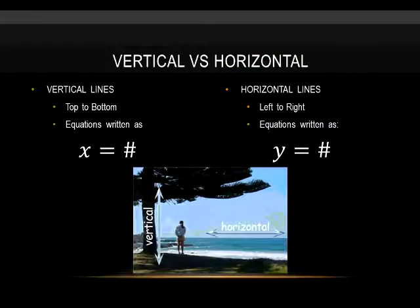So vertical versus horizontal lines. The biggest thing is know the difference, know when you have each. Vertical lines go up and down. They're written as x equals some number. The x number does not change; y can, but the x number doesn't change. You don't go left to right at all. It just goes straight up and down, vertical, like a tree.